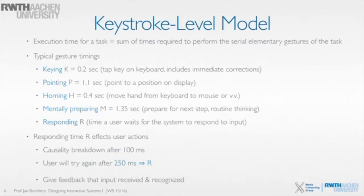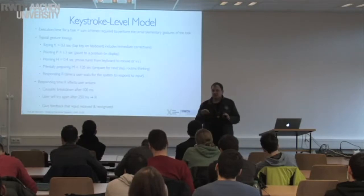Here are some examples from the literature by Card, Moran, and Newell. Some of these actions are very obvious — tapping a key, which could also be a click on the mouse button, on average in a sequence of tasks takes 0.2 seconds, or 200 milliseconds. That includes immediate corrections when you just mistype and correct yourself.